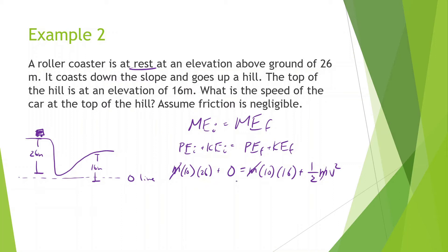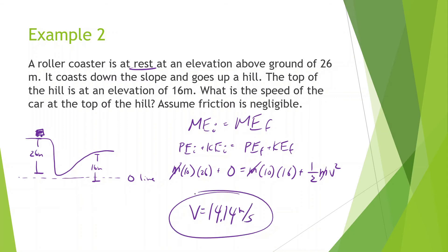Let's solve from here: 10 times 26 minus 10 times 16, times 2, square root. And we get velocity equal to 14.14 meters per second.